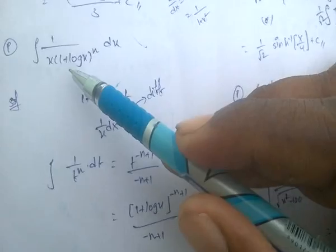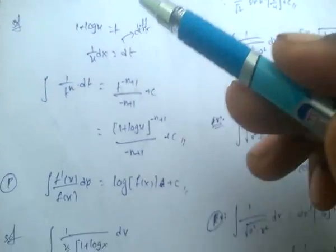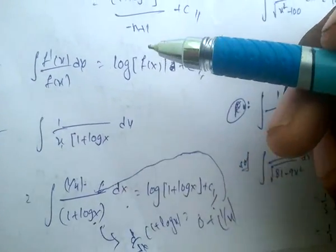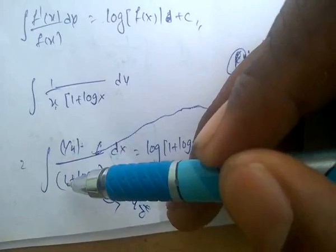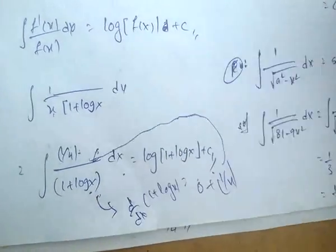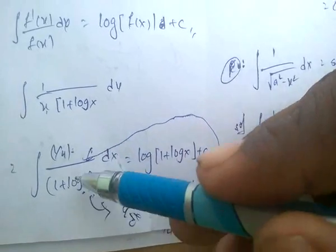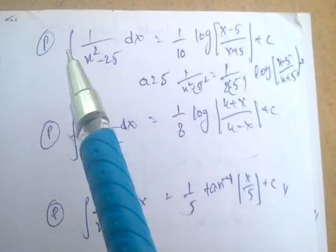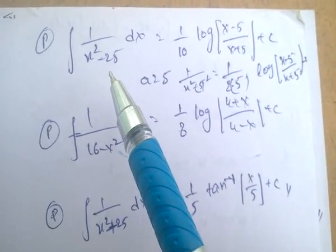For problems with (1 + log x), let t equal 1 + log x, differentiate, then replace and finally substitute t back. The formula integral of f'(x)/f(x) dx equals log|f(x)|. For example, if numerator is 1/x and denominator is (1 + log x), then f(x) equals 1 + log x and f'(x) equals 1/x, so the answer is log|1 + log x|. For integral of 1/(x² − 25) dx, use the formula with a equals 5.